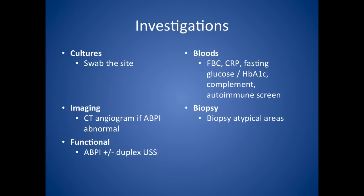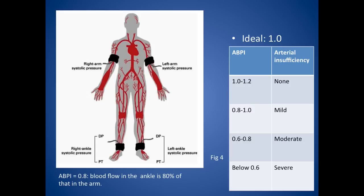Looking in more detail at the ABPI: you measure the brachial blood pressure in the usual way, on both arms. Then you inflate the blood pressure cuff around the lower calf muscle just above the ankle joint, and put a Doppler ultrasound probe over the dorsalis pedis artery and the posterior tibial artery. The higher of the two pressures in either the DP or PT artery is conventionally taken as the ABPI numerator, and the higher of the two brachial pressures as the denominator. You have to be careful where people might have calcified arteries, as that will give a falsely elevated score — and that's often a question that pops up in the OSCE station.